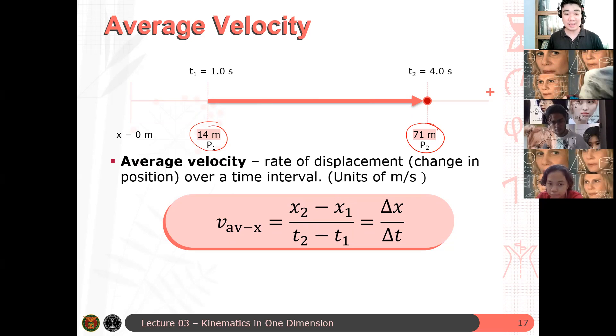Okay? So that's basically your average velocity. Again, it's average because it's possible that the car slowed down in this area, or maybe sped up in this area, and so on and so forth. What we only are interested in for now is the average rate of change in the position, or therefore, average rate of displacement over a time interval. Okay?